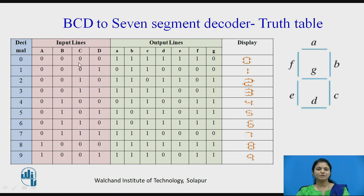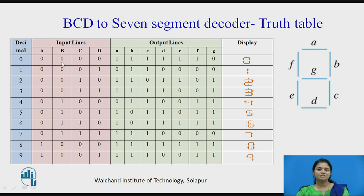Now for the number 0, all inputs A, B, C, D are 0, but in the 7-segment only G is going to be off. So segments A, B, C, D, E, and F are all 1. For number 1, only B and C should be 1, so B and C are 1 and remaining all segments are 0. For 0 to 9, all segments are set according to which should be on and which should be off.